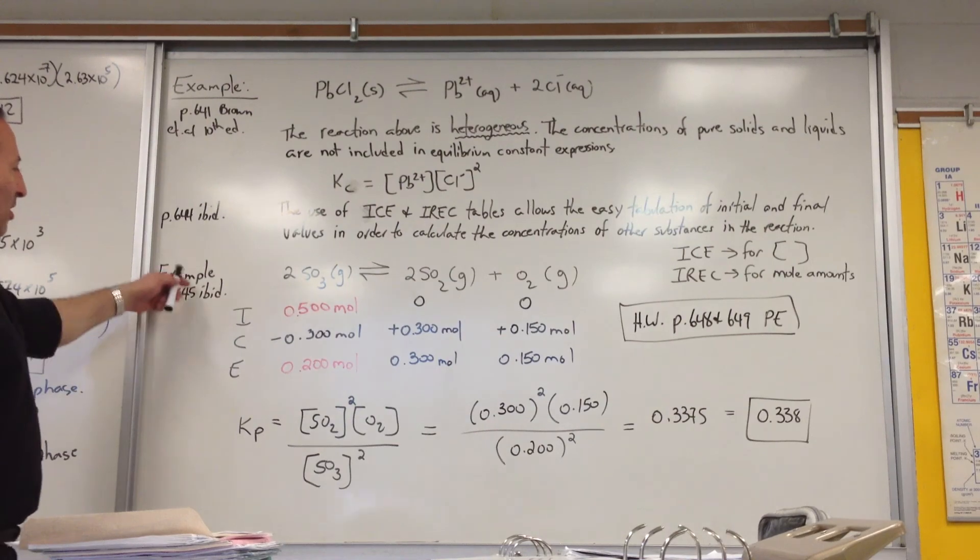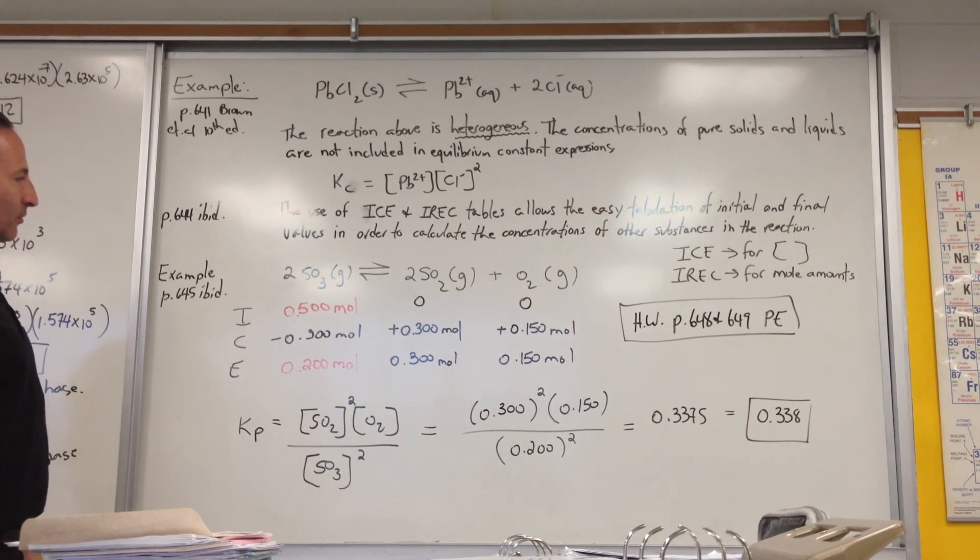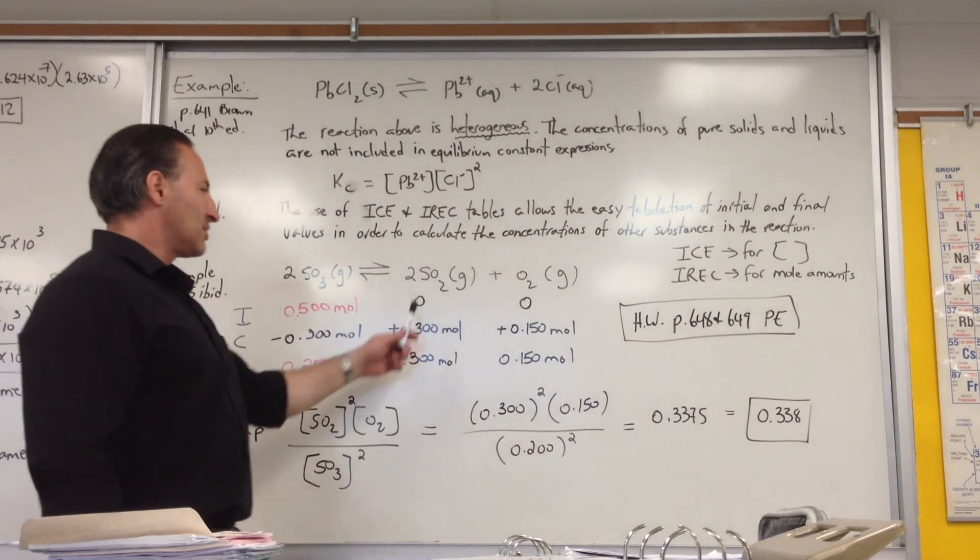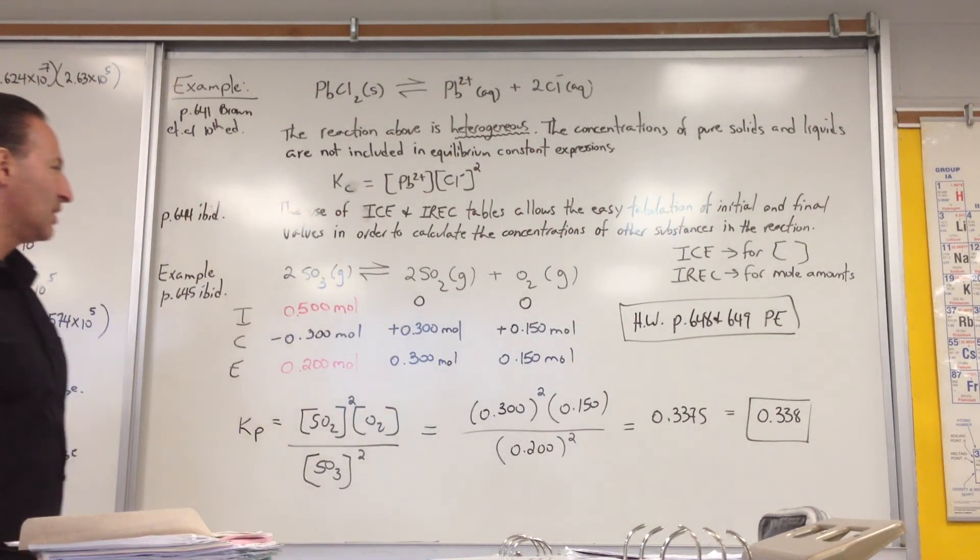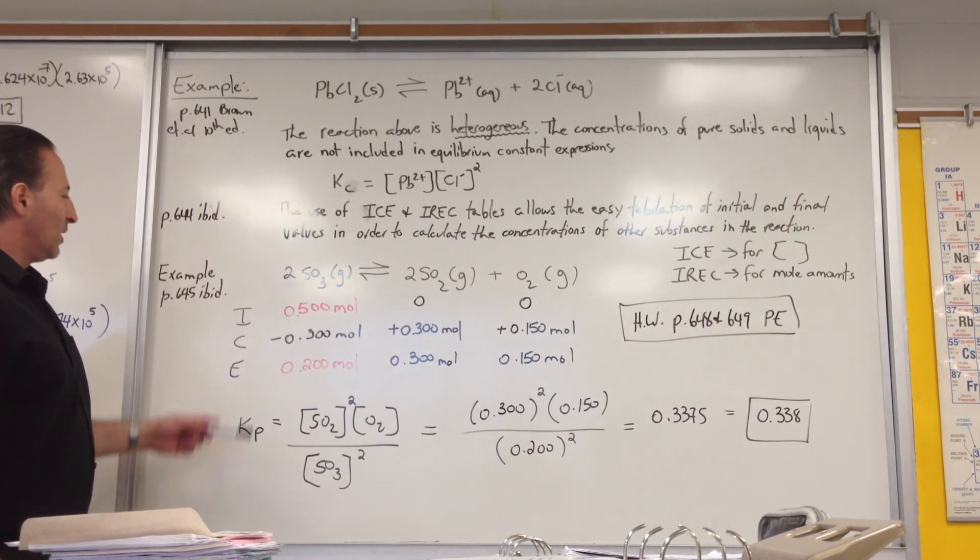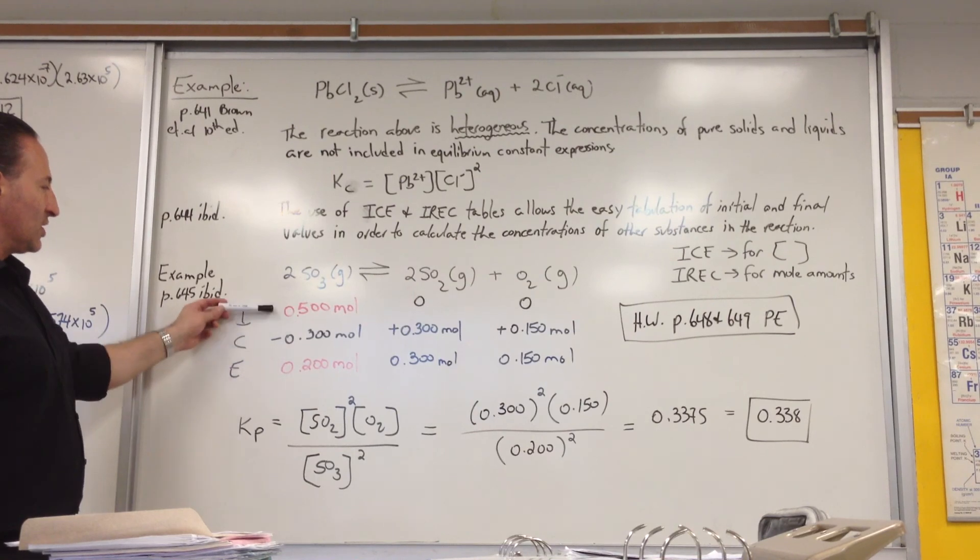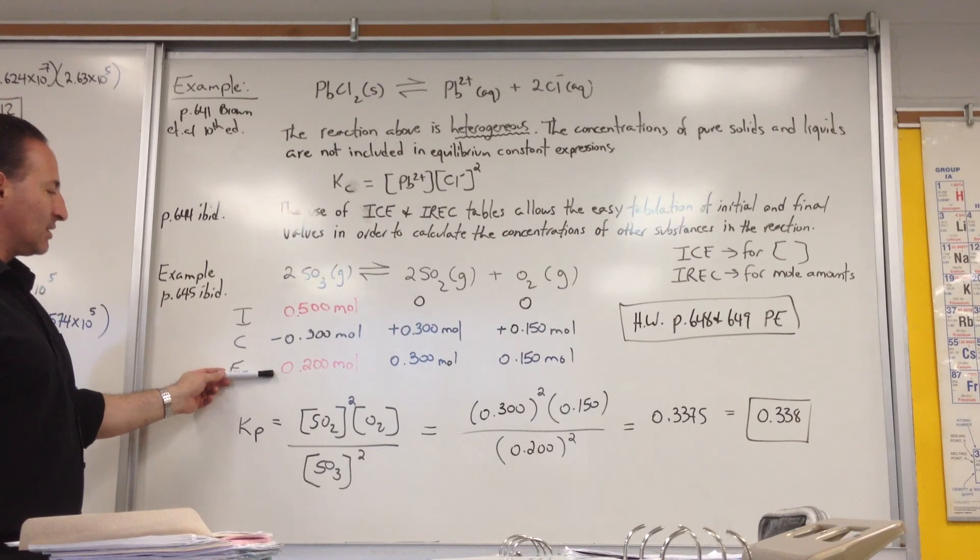An example of a problem that we use in an ICE table is the dissolution of sulfur trioxide into sulfur dioxide and oxygen gas. In this particular problem, they give us two initial conditions. They tell us the initial condition of the amount of sulfur trioxide being reacted and its equilibrium concentration. Two data points.